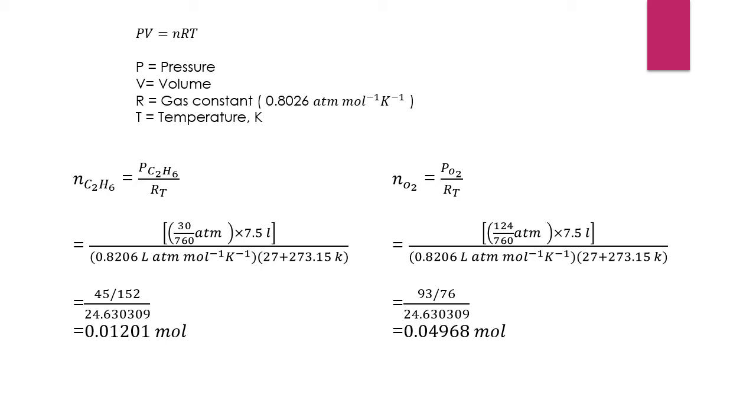Then we will do the calculation and for C2H6, we will get 0.01201 mol and for O2, we will get 0.04968 mol.